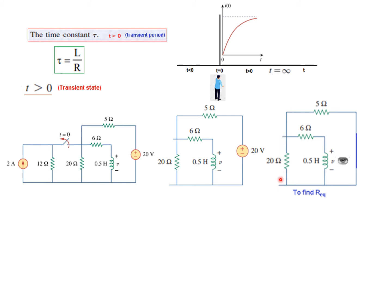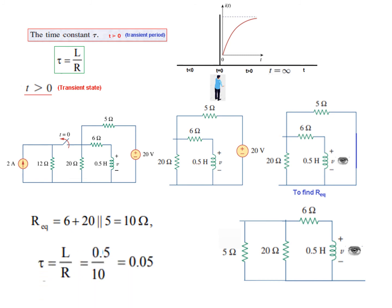You can see from here that this resistance and this one are in parallel. We can redraw it. So here 20 and 5 come in parallel, and these two in parallel will be 4 ohms, plus 6 in series will be 10 ohms. So Requivalent is 6 plus 20 parallel with 5, which will be 4 ohms, so the total value is 10 ohms. We know L is 0.5, so tau will be L over R: 0.5 over 10 equals 0.05 seconds.